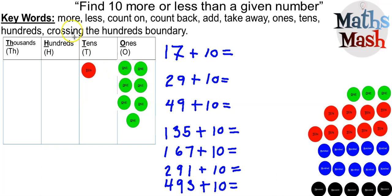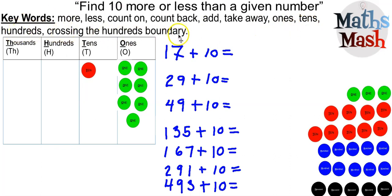You can see that we've got our vocabulary here. We've got 'more', which is the same thing as add; 'less', which means almost the same thing as subtract; 'count on', almost the same thing as adding; 'count back', almost the same thing as subtraction; and then add, take away, ones, tens, hundreds, and crossing the hundreds boundary.